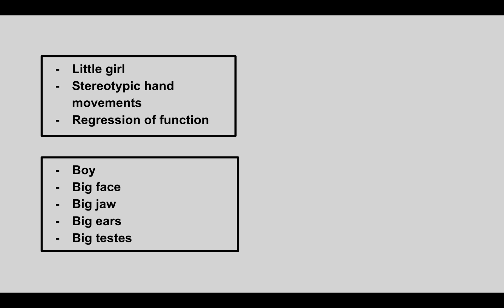The next condition: a little girl with stereotypic hand movements and regression of function. This is Rett syndrome — an MECP2 mutation. Early on, these girls develop normally, but then suddenly stop performing previously acquired functions, and the vignette will mention repetitive hand movements or hand-flapping.